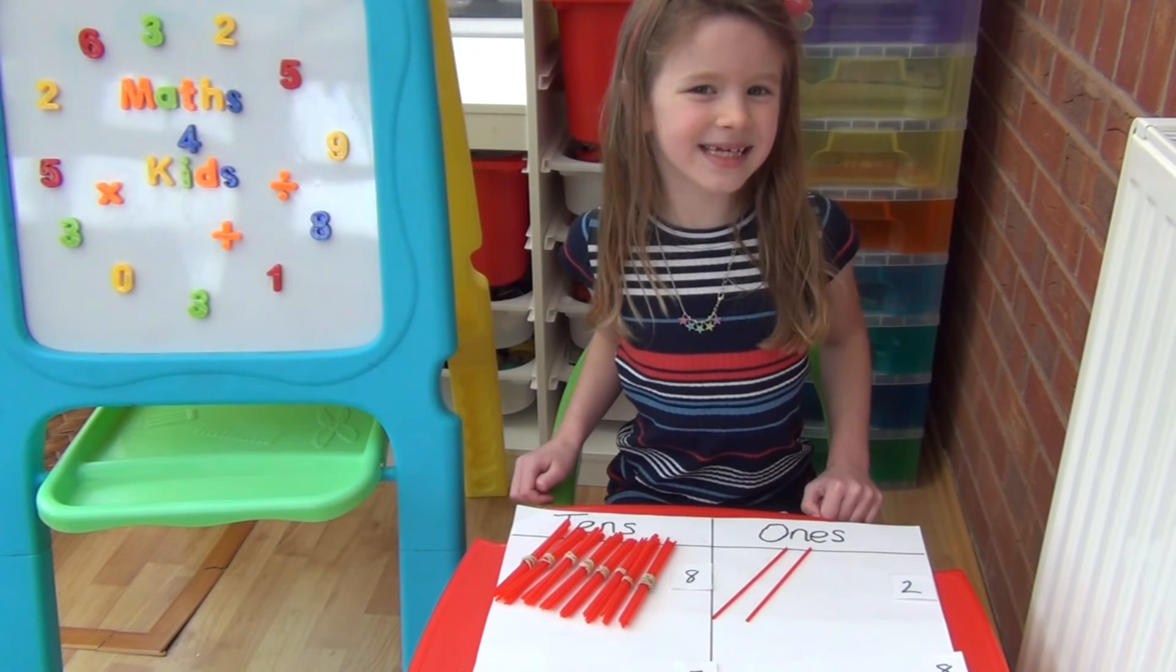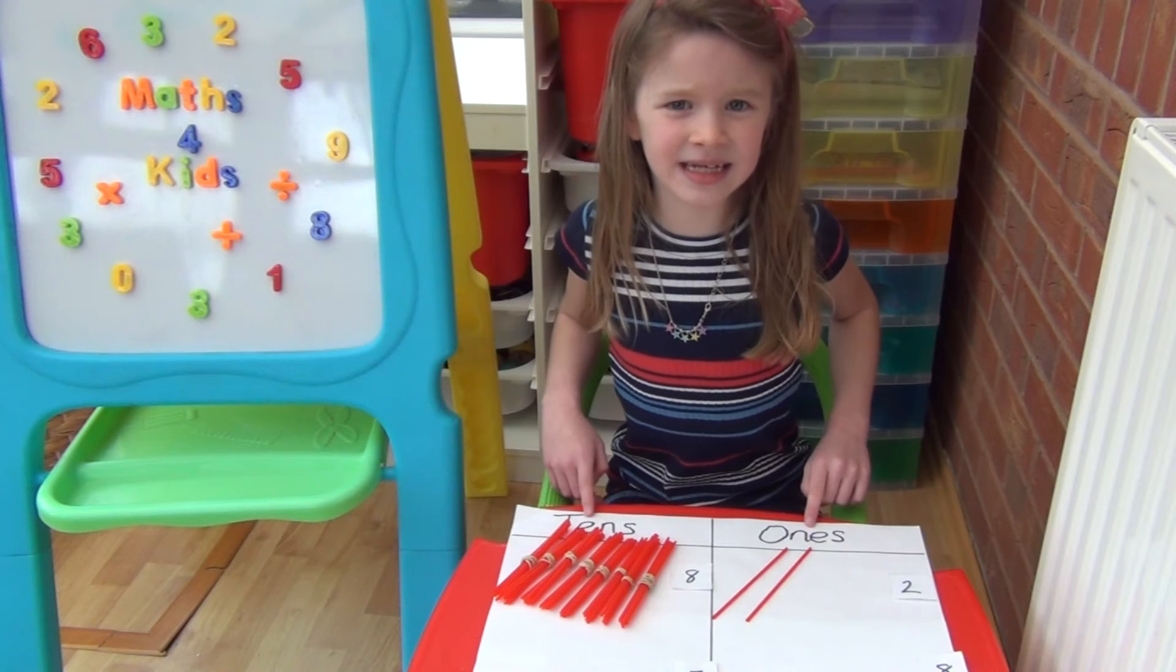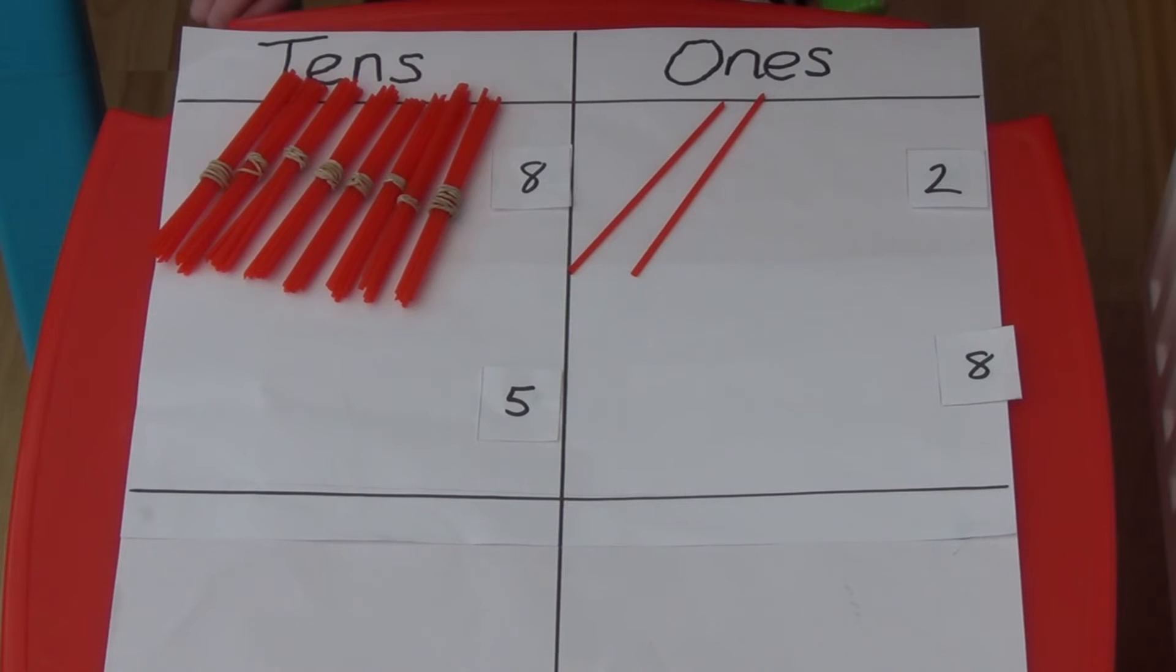I'm going to do exactly the same as last time and subtract the ones first and then the tens. This time I have a problem. I need to take 8 away but we only have 2 straws. I'm going to have to exchange one of my tens for 10 ones and place it in the ones column.